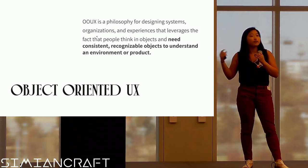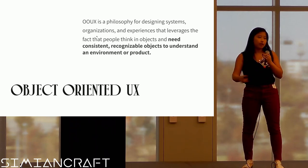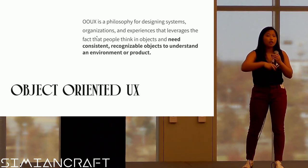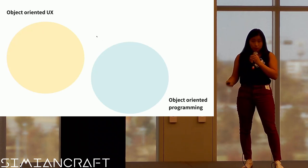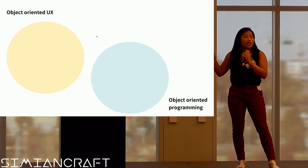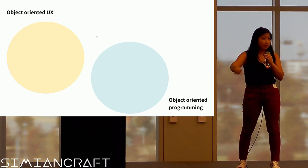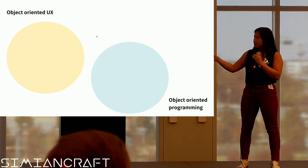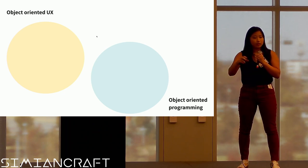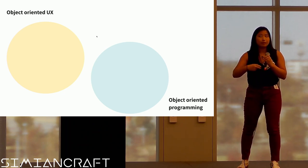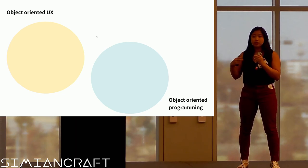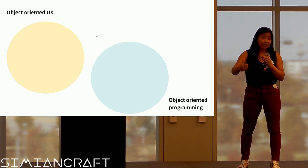OOUX is a philosophy that UX designers, anyone, stakeholders, can use to really understand what are the pieces within the system. I'm sure a lot of you are very familiar with object-oriented programming. It's very similar in the sense of identifying what the pieces are, but for object-oriented programming it's about the structure of your code. When we're thinking about OOUX, we're thinking about what are users interacting with? The terms are going to overlap, the methodologies are going to seem familiar — so that's actually a really good thing.